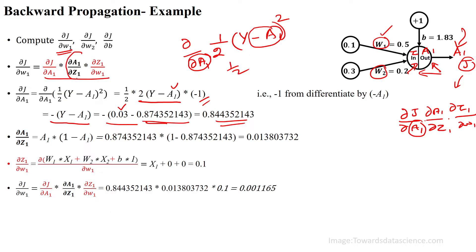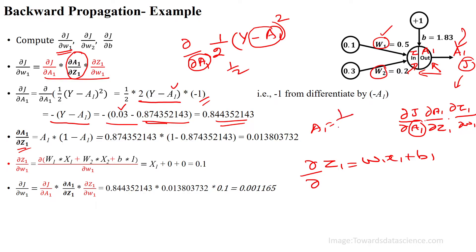Next we calculate ∂A1/∂Z1. Since A1 = σ(Z1) = 1/(1 + e^(−Z1)), applying the partial derivative with respect to Z1 gives the sigmoid derivative equation. Substituting values, we get ∂A1/∂Z1 = 0.013. Then for ∂Z1/∂W1: in the equation Z1 = W1·X1 + W2·X2 + B, differentiating with respect to W1 gives X1 (the other terms become 0 and W1 becomes 1).